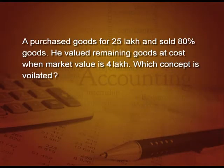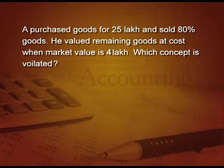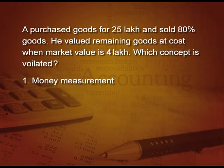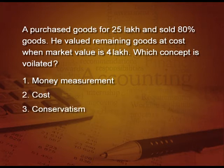A purchased goods for 25 lakhs and sold 80 percent of the goods, so 20 percent — worth 5 lakhs — is remaining. He valued the remaining goods at cost, that is 5 lakhs, when the market value is only 4 lakhs. Which concept is he violating — money measurement, cost, conservatism, or periodicity? Yes, conservatism. Conservatism says you have to value goods at cost or market price whichever is less. He is taking goods at cost which is more than the market price, and it is wrong according to the concept of conservatism.